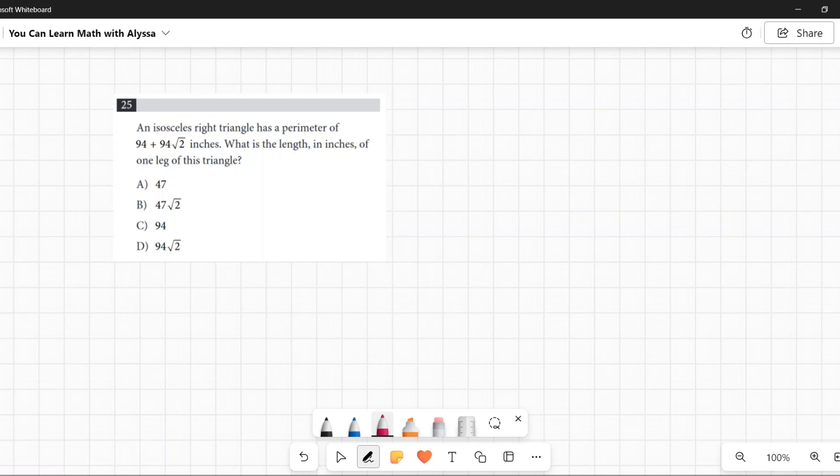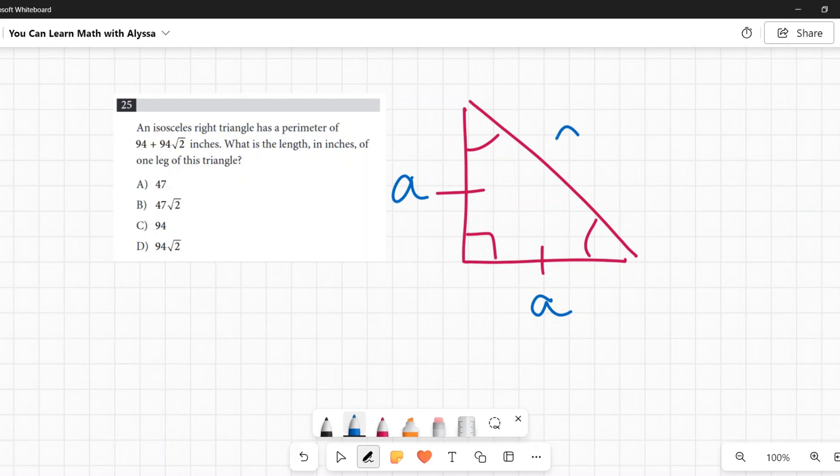An isosceles right triangle is a 45-45-90 right triangle. Hopefully you've been told in your classes that there is this pattern for the legs of a right triangle: if the two legs we call them both a, then the hypotenuse would be a times the square root of two.